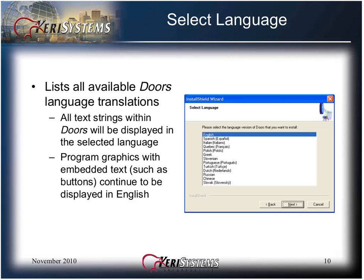Select the language to be used with DOORS. This lists all of the available language translations. Note that all of the text strings within DOORS will be displayed in the selected language, but the program graphics, such as embedded text within the buttons, continue to be displayed in English. Select your language and click Next.